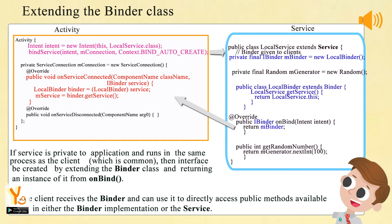Extending the Binder class: if the service is private to the application and runs in the same process as the client, which is common, then an interface can be created by extending the Binder class and returning an instance of it from OnBind. The client receives the Binder and can use it to directly access public methods available in either the Binder implementation or the service. An example is shown above.